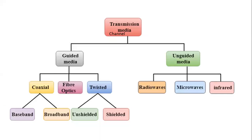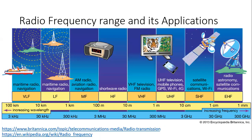Different transmission media are used based on the surrounding environment, distance, type of data, and bandwidth. When talking about transmission, we mostly use the term radio frequency. Radio frequency is a very wide range — it can go from 3 kilohertz to 300 gigahertz. Every part of this range is used for different applications. For astronomy, radio, or satellite communication, very high frequencies close to 300 gigahertz are used. For navigation, frequencies of 3 kilohertz to 300 kilohertz are used.